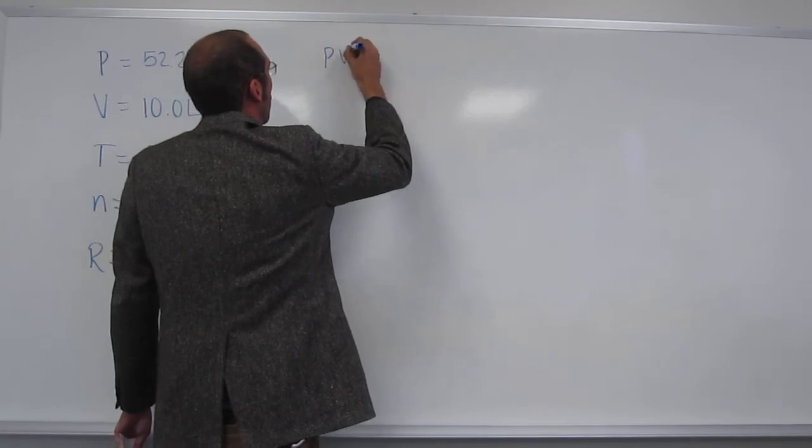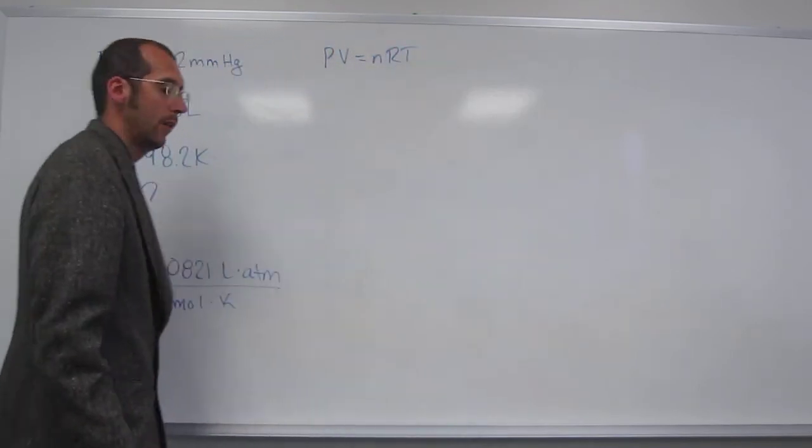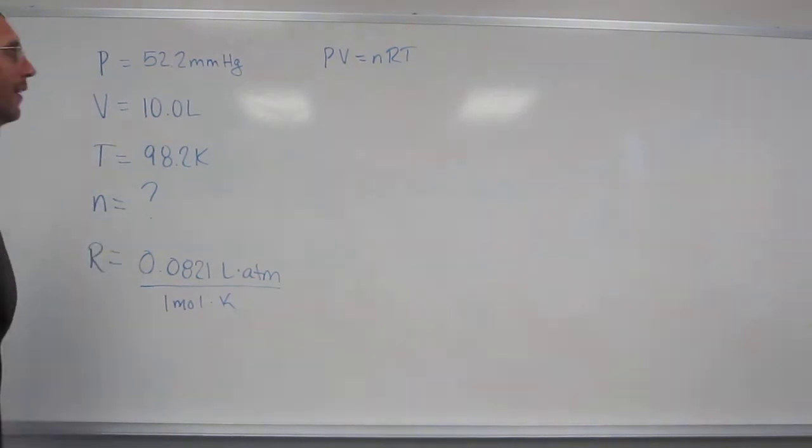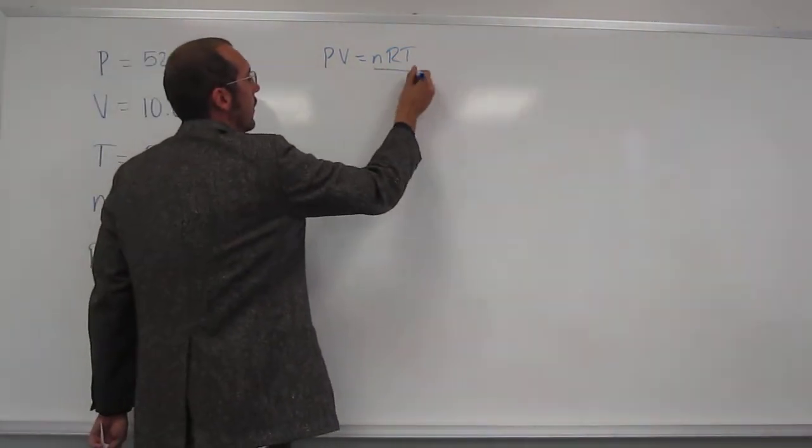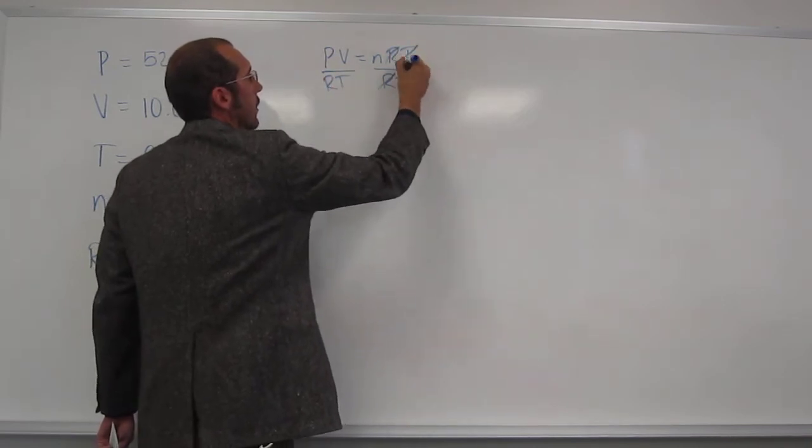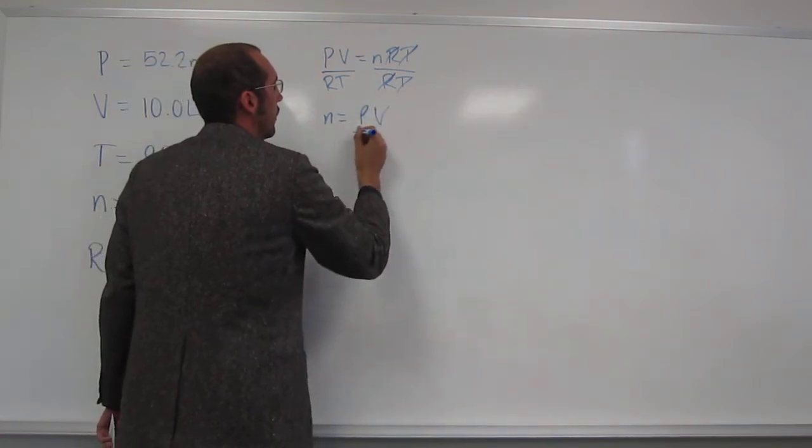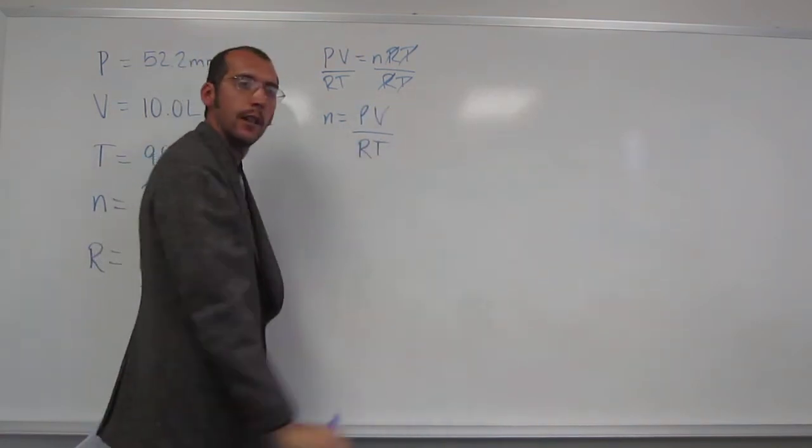So how do we do that? PV equals NRT. Isolate the variable. Which variable do you want to isolate? N, right? How do we do that? Divide both sides by RT, right? Cancel, cancel, cancel, cancel. What do we get? N equals PV divided by RT, right?